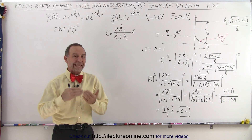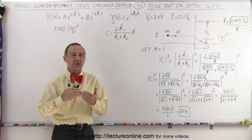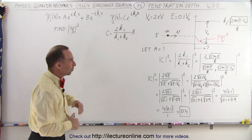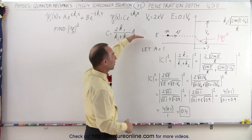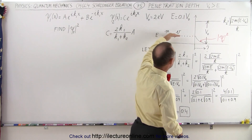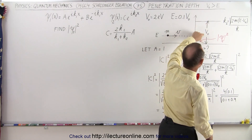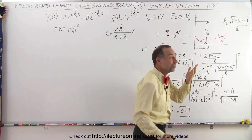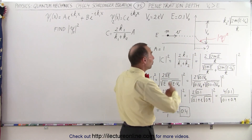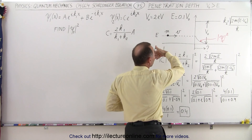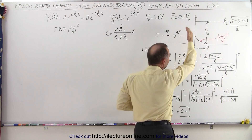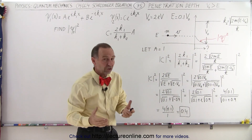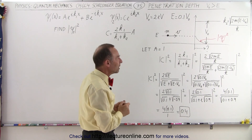Let's talk about the case where the energy of the particle is less than the potential of the step. We have a particle with energy E that comes upon a step where the potential V₀ is larger. The particle will get reflected, but part of the particle will actually penetrate into the potential step. The question is, how far will that penetration be?